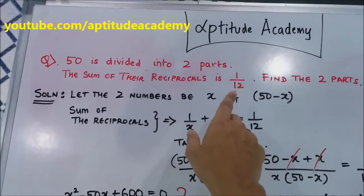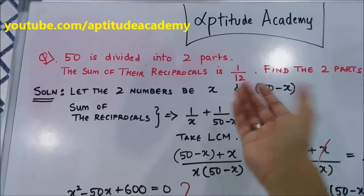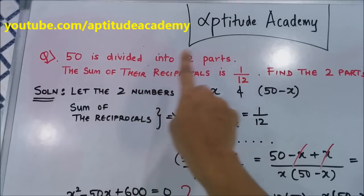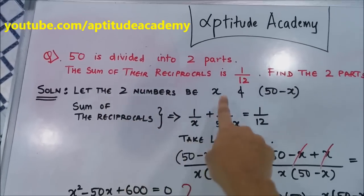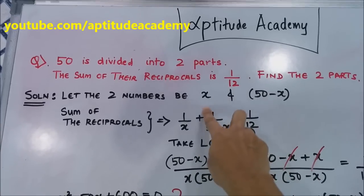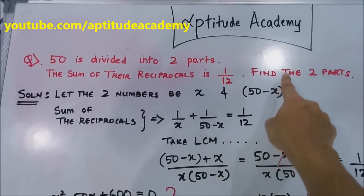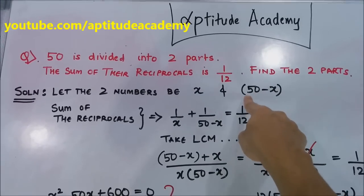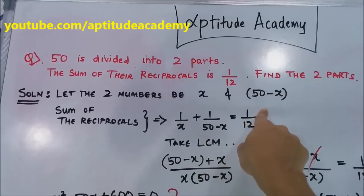You could let both those parts be x and y, but why do you want the extra variable y when you know that 50 is divided into two parts? So let the two numbers be x and 50-x, because when you add x and 50-x, the plus x and minus x will get cancelled and you will have 50. So now we've got our two terms.